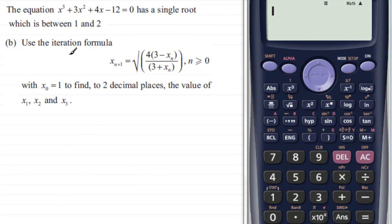Hi, now what we have here is a question based on working out approximations to a root using an iterative formula. We've got the equation x³ + 3x² + 4x - 12 = 0 has a single root